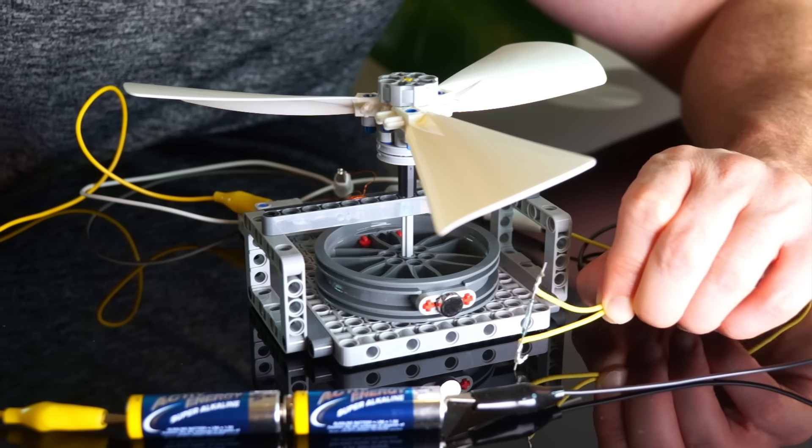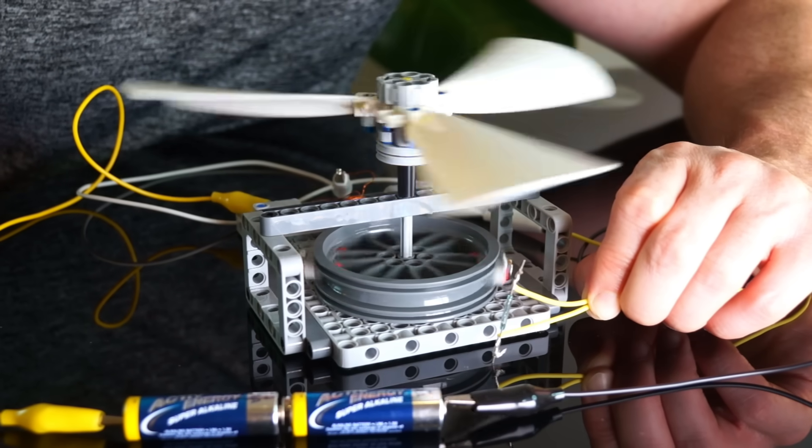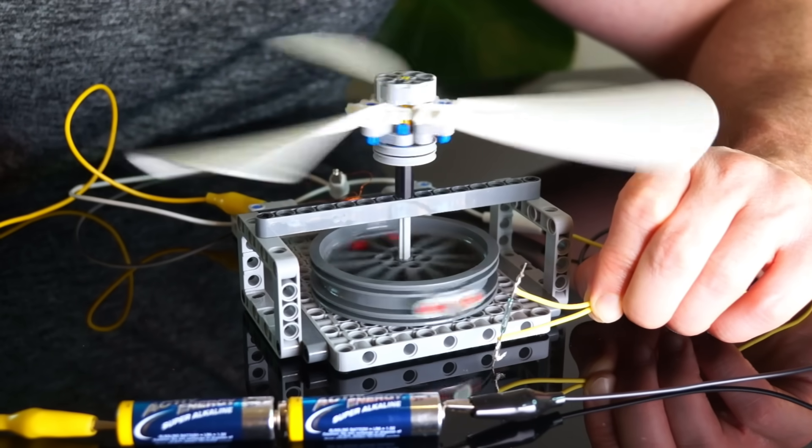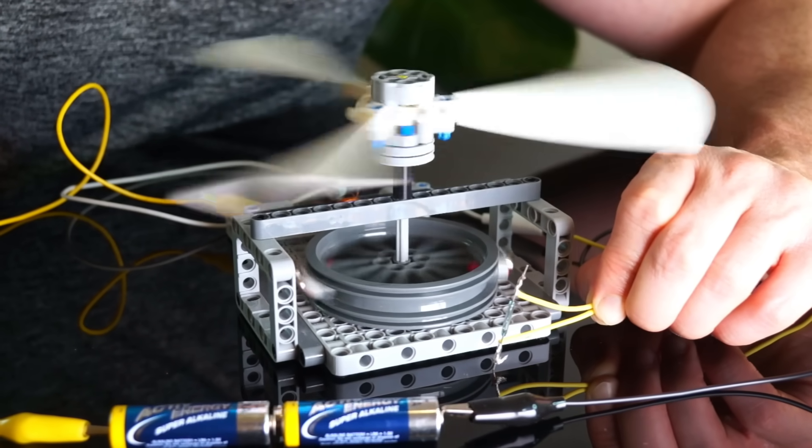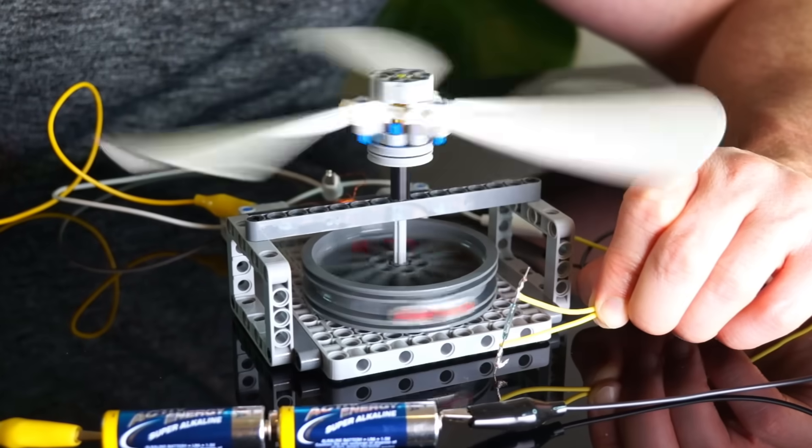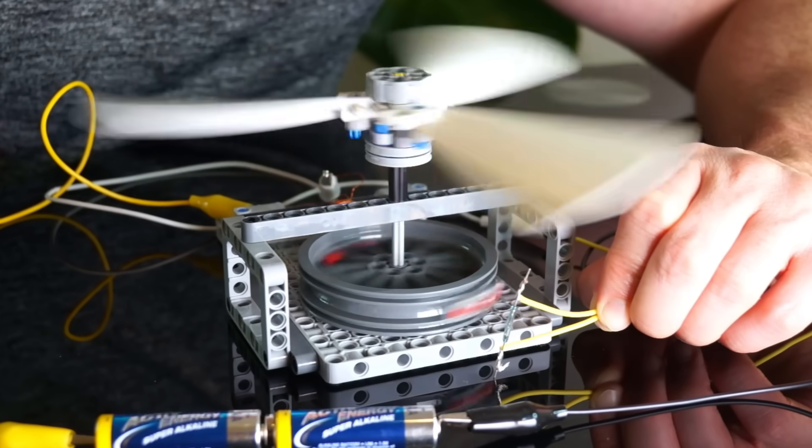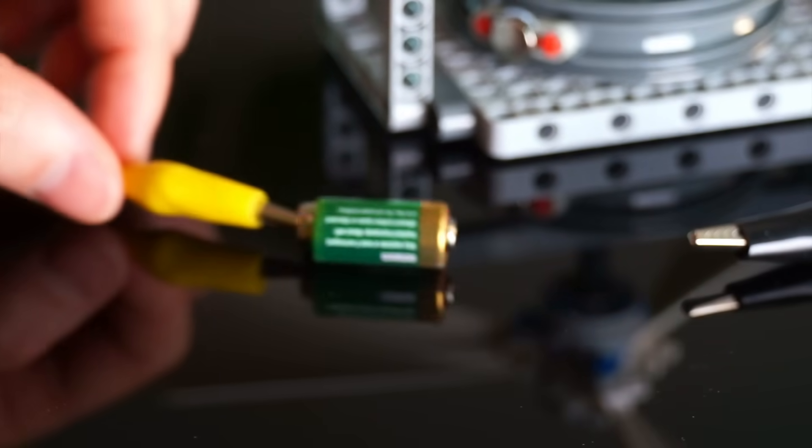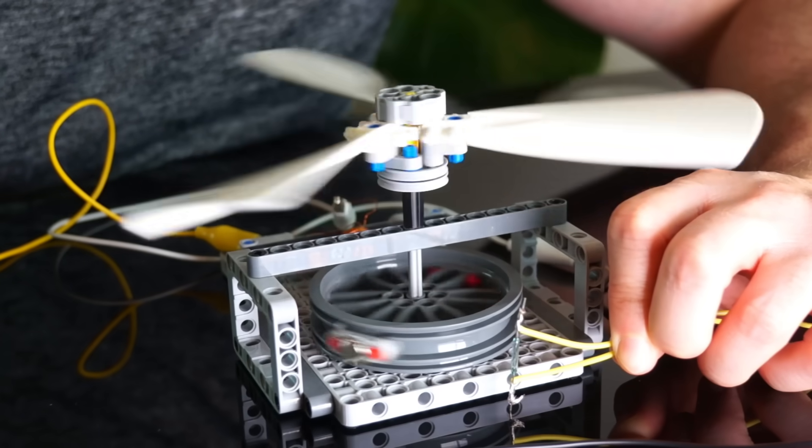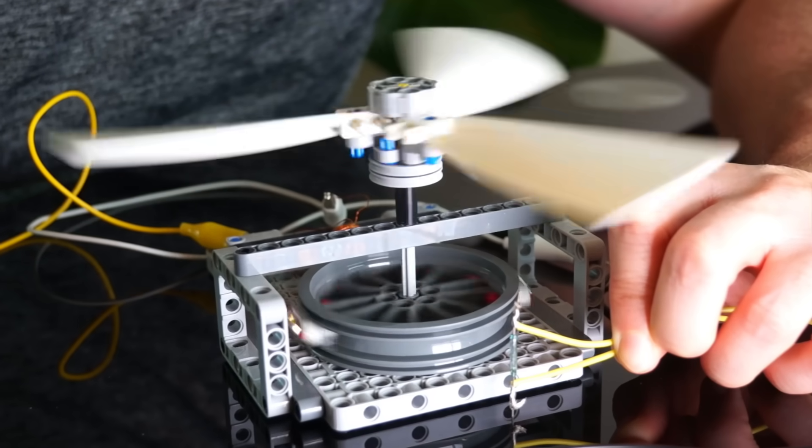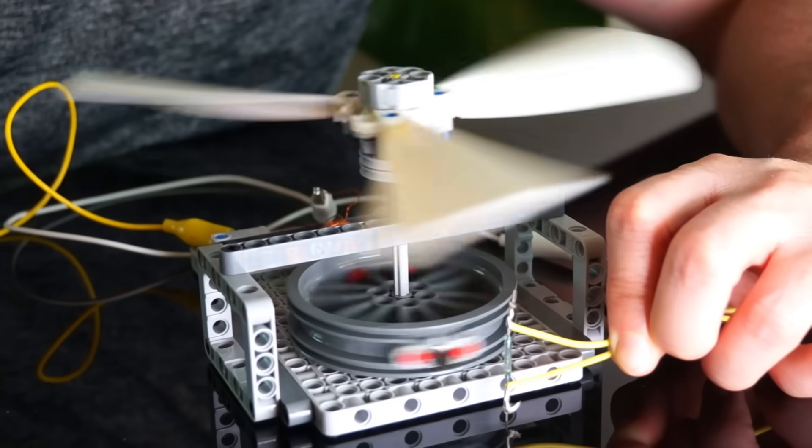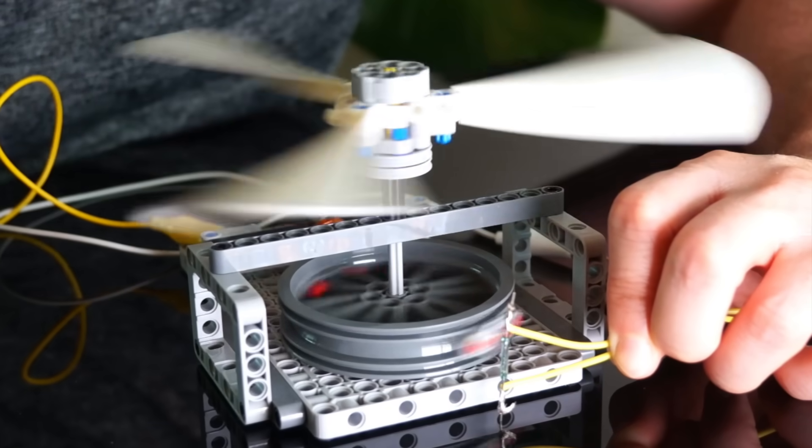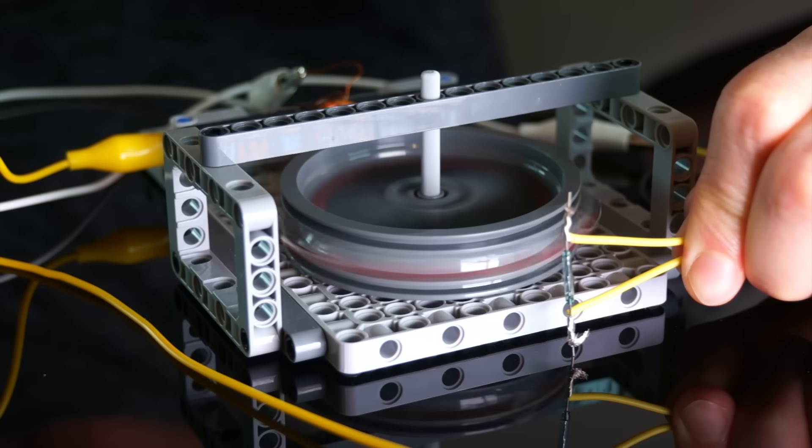Now, what if we add a fan to it? How fast can it run now? Yeah, quite a bit slower. Even if we use a 6 volt battery, it's pretty slow. Unfortunately, with higher voltages or current, the switch tends to briefly fuse together, causing the motor to get stuck. So overall, it's a pretty weak motor.